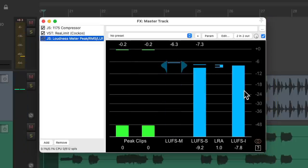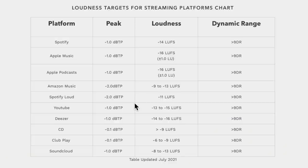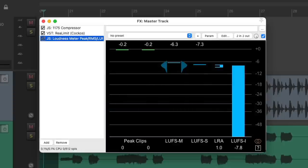Which in most situations is too loud. If we check this chart for Spotify, there's no point in going over minus 14 LUFS, because it's just going to turn the volume of your track down. Or minus 16 for Apple, or minus 9 to 13 for Amazon, and so on. So unless you need a really loud mix, we probably want to pull back on the limiter.